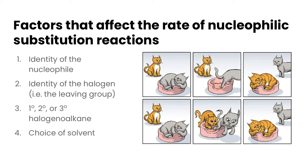In this video we're going to take a look at four factors that affect the rate of nucleophilic substitution reactions. The four factors are the identity of the nucleophile, the identity of the halogen which is also called the leaving group, the class of the haloalkane, whether it's primary, secondary, or tertiary, as well as the particular choice of solvent.